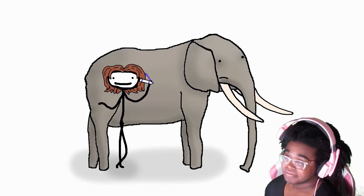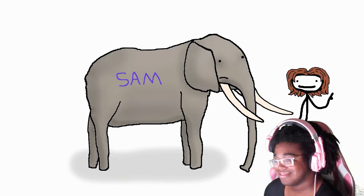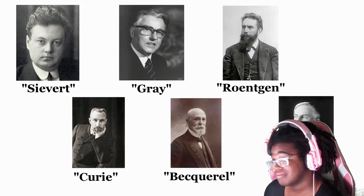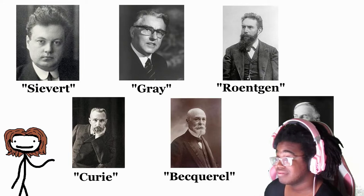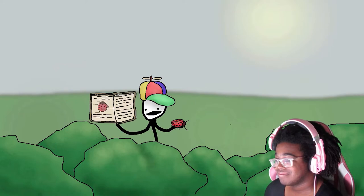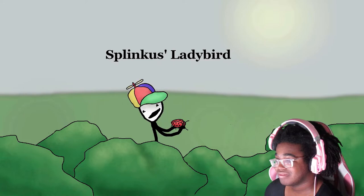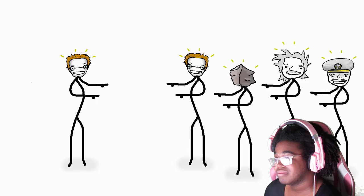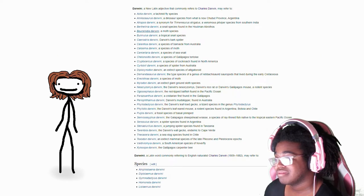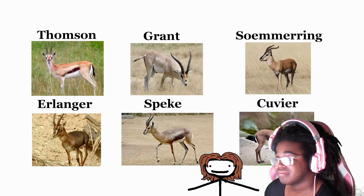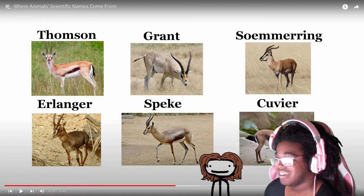If there's one thing the scientific community loves, it's clout, and there's no better way to go down in history than plastering your own name on something you found. Not all fields have the same volume of things to scribble your John Hancock over. In zoology, any little goober flouncing through the underbrush can say 'this one has 13 spots but the one in the books only got 11 — I will call him Splinkus's ladybird.' Alternatively, plenty of biologists have given shout-outs to their contemporaries. Darwin's got a shitload, but even background characters get immortalized — Thompson, Grant, Summering, Erlinger, Speak, and Cuvier all have gazelles.